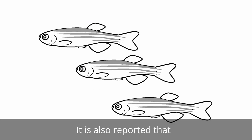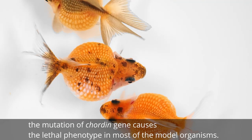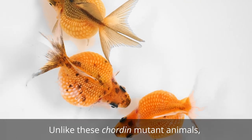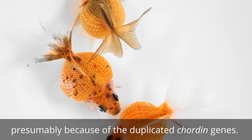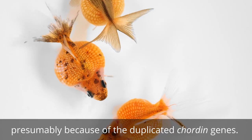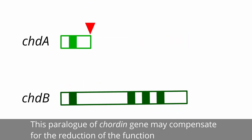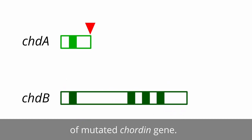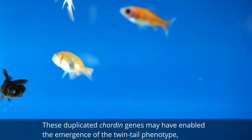It is also reported that mutation of the caudin gene causes a lethal phenotype in most model organisms. Unlike these caudin mutant model organisms, goldfish can survive nicely, presumably because of the duplicated caudin genes. One caudin gene is mutated but the other is still functional. This paralogue of the caudin gene may compensate for the reduction in function of the mutated caudin gene, and this duplicated caudin gene may have enabled the emergence of the twintail phenotype.